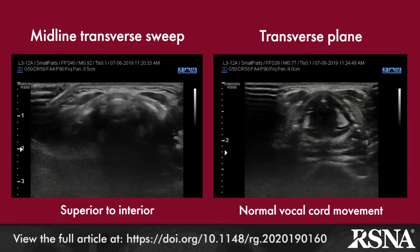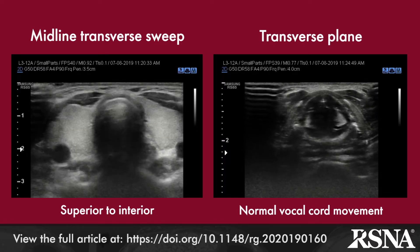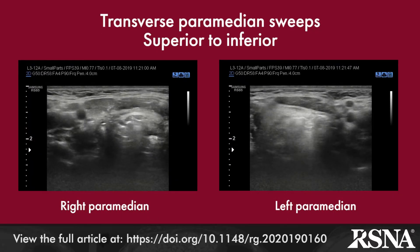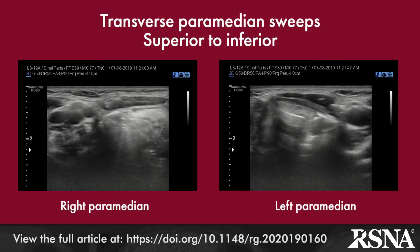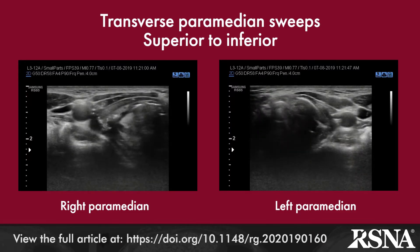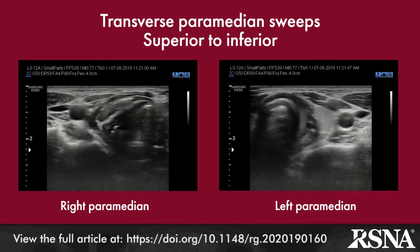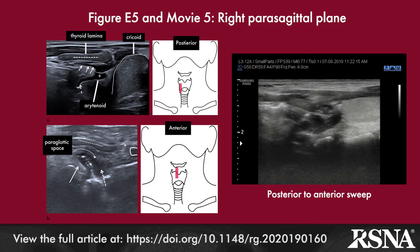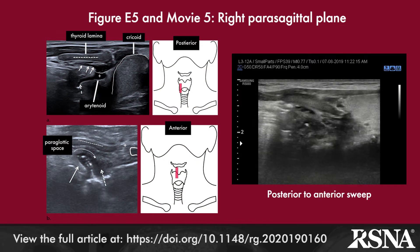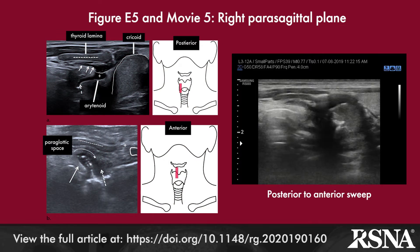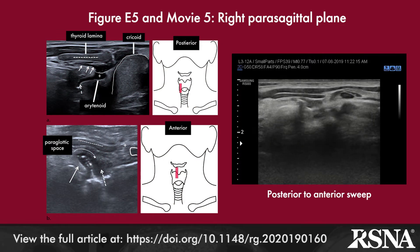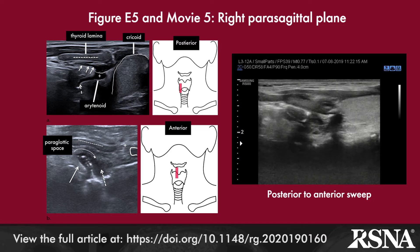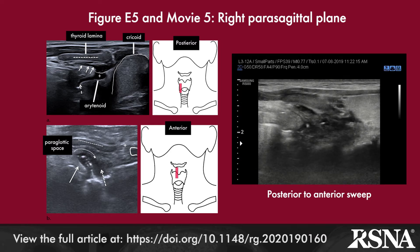After the midline transverse sweep, the second and third sweeps are right and left paramedian transverse sweeps. These are annotated on the static images seen in Figures 3 and 4 in the article. The fourth and fifth sweeps are right and left longitudinal sweeps, respectively, from posterior to anterior. These are also illustrated in Figure 5.